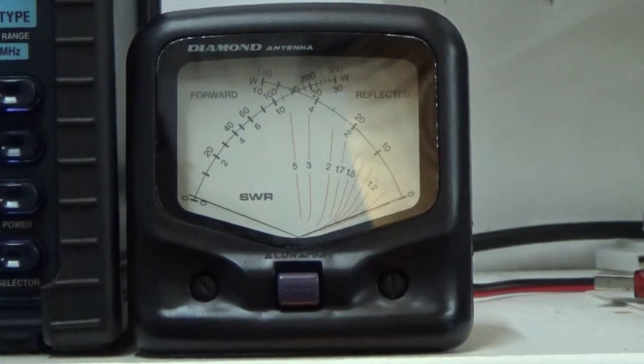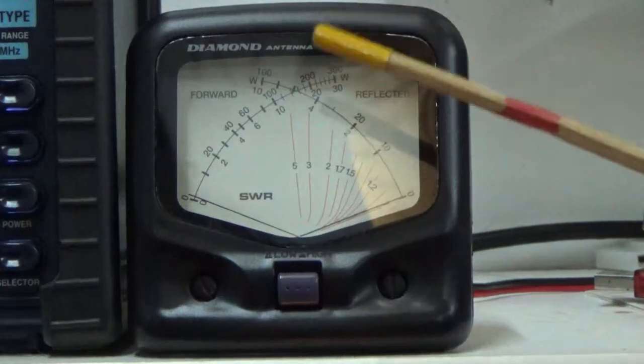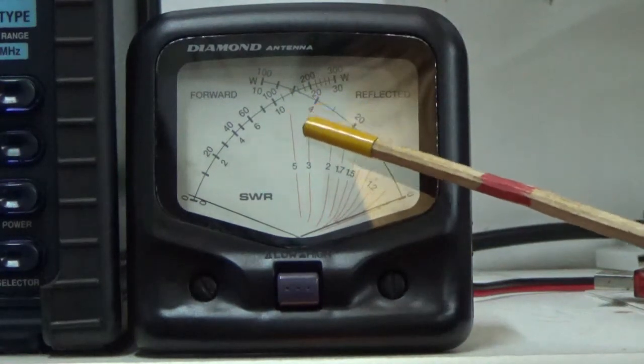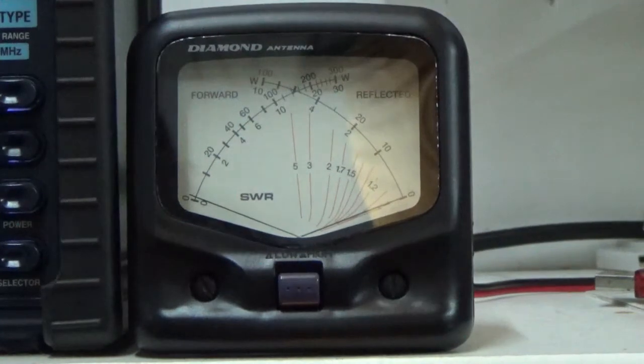This is KI5 JUF testing, Kilo India 5 Juliet Uniform Foxtrot. If you'll notice, the power comes up and it stays perfectly at 15. Now watch what happens.